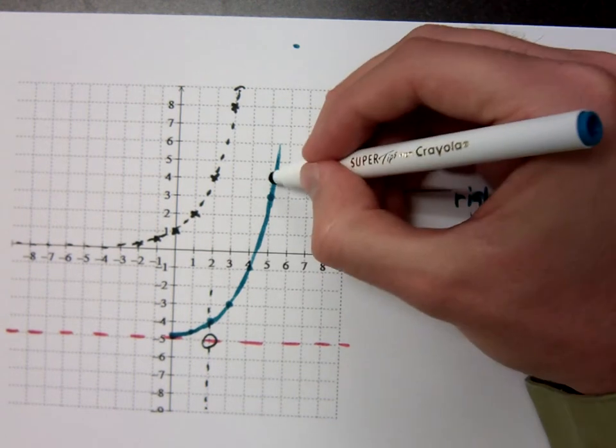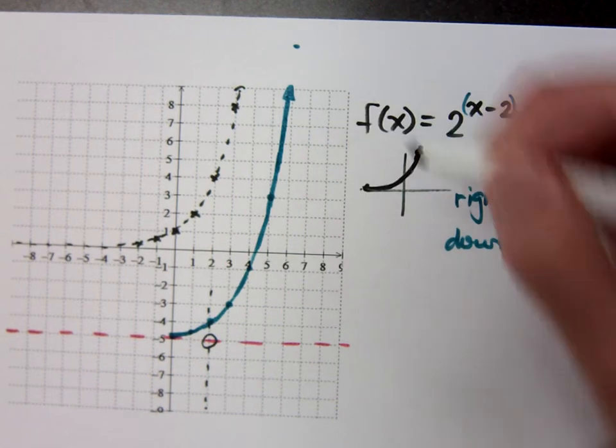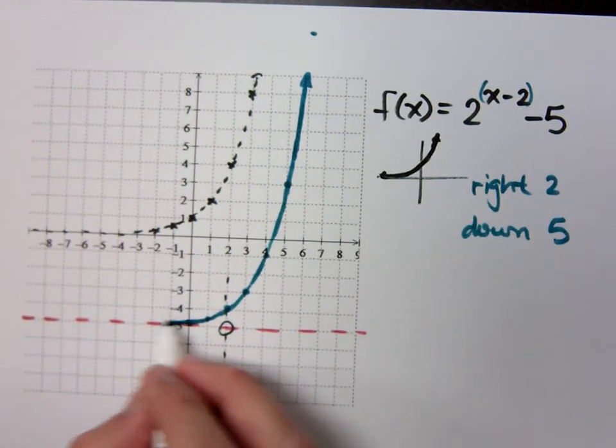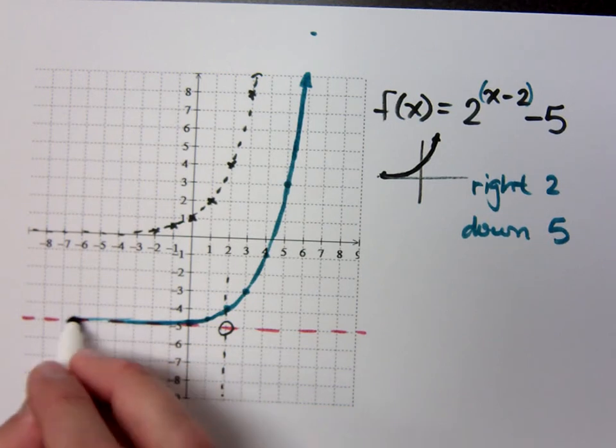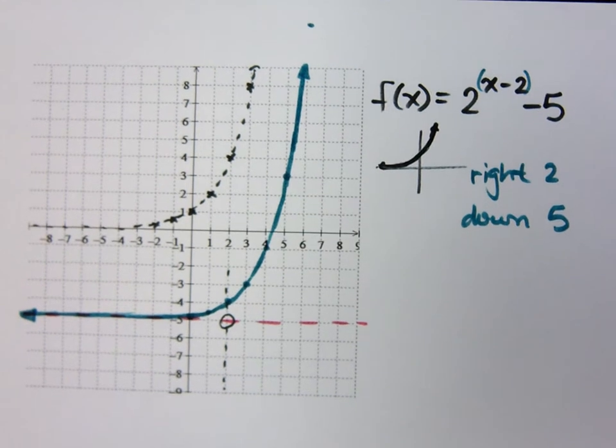I'm aiming for that point. And I just finished graphing this guy down here. Do not go below your horizontal asymptote. But you will get really, really, really close to that guy.